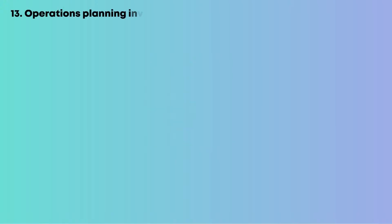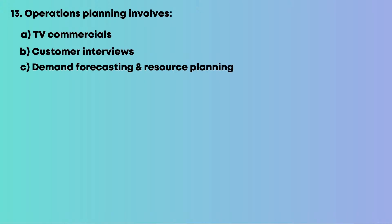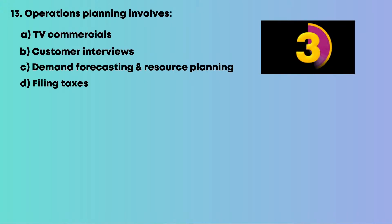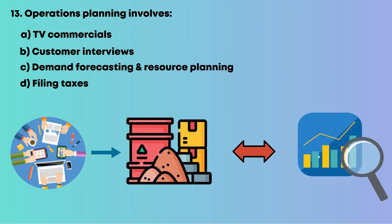Question 13: Operations planning involves which of the following? Options are: A, TV commercials; B, customer interviews; C, demand forecasting and resource planning; D, filing taxes. Planning aligns resources with anticipated demand. The answer is C, demand forecasting and resource planning.